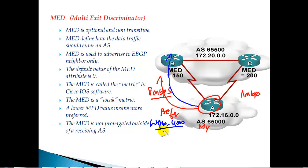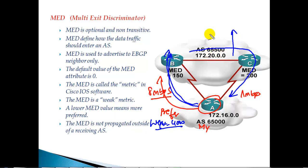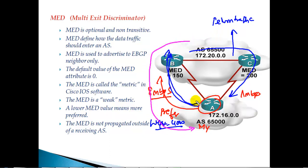When applying weight or local preference, it's going to do only half of our job. Our job is to ensure that our traffic leaves from the high-speed side. However, the return traffic may or may not use the same path — it might use an alternate route because of the default path selection process inside the remote autonomous system. What we want is for the return traffic to also use the 8 Mbps link. One option is to configure local preference or weight on that remote AS.